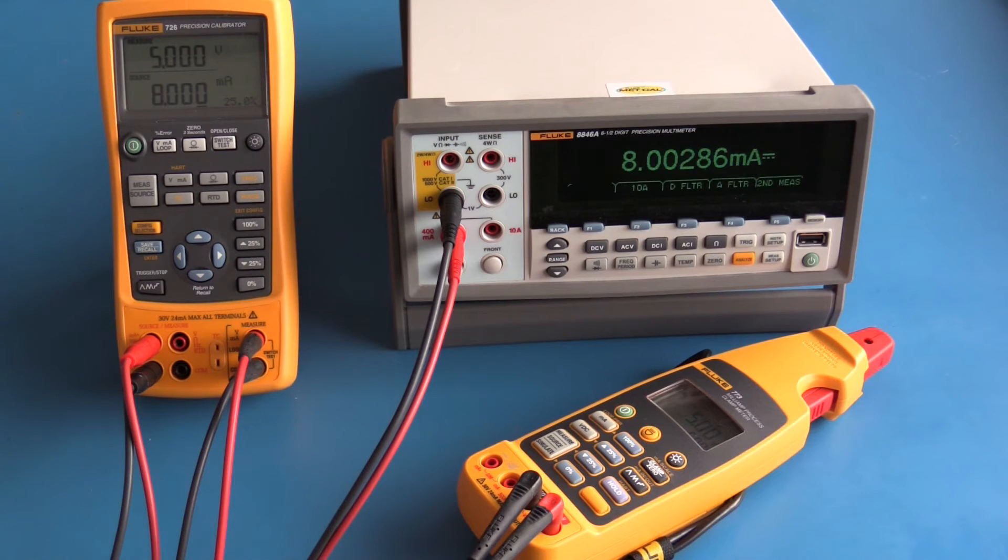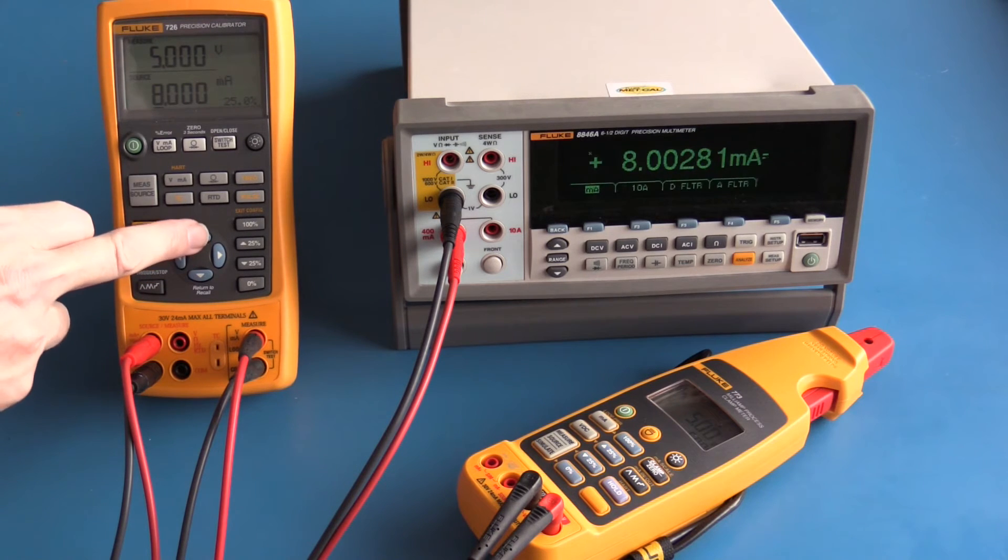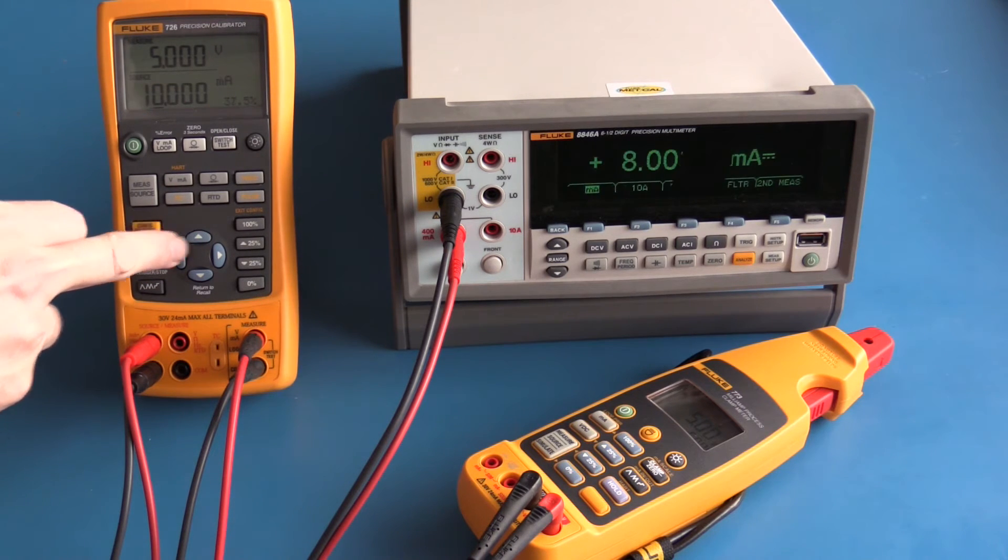I can also set the source current to anywhere within its range. 10 milliamps for example, which is 37.5 percent on a 4 to 20 milliamp loop. In addition to being able to step in 25% increments or source any arbitrary value, the resolution of the Fluke 726 is one microamp.